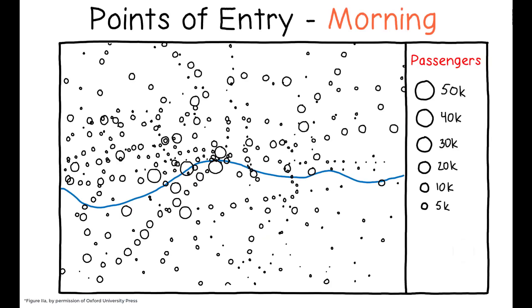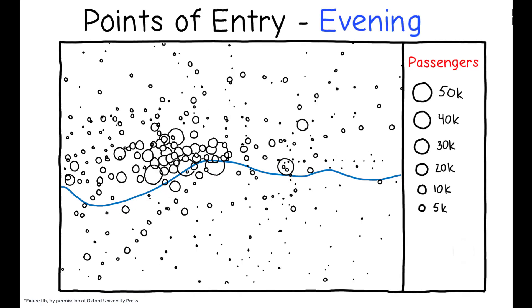Intuitively, this makes sense given the observed patterns of geographic dispersion. While points of entry to the morning commute are dispersed throughout the London metropolitan area, points of entry to the evening commute are heavily concentrated in central business districts where station density, and therefore the possibility to substitute stations, is much higher.